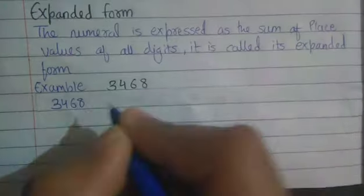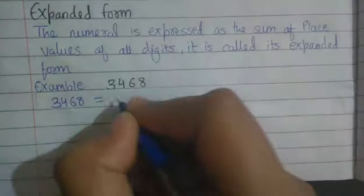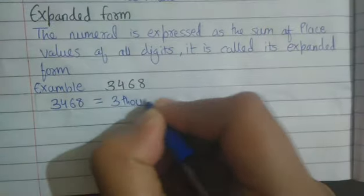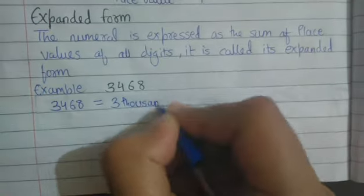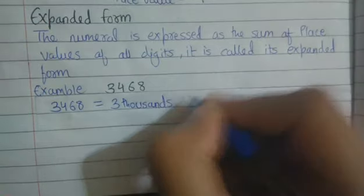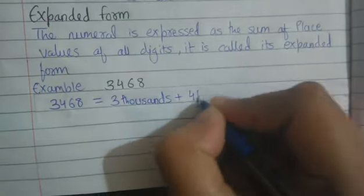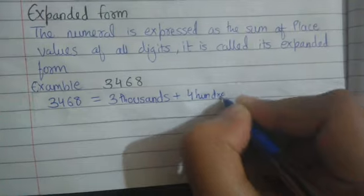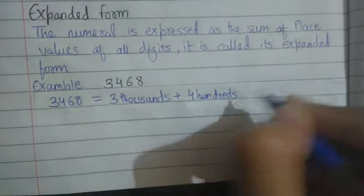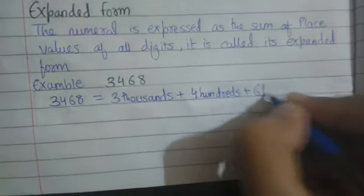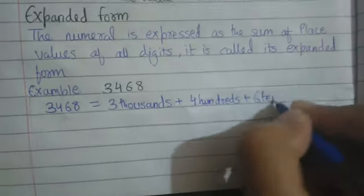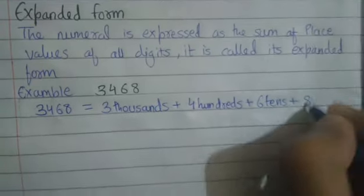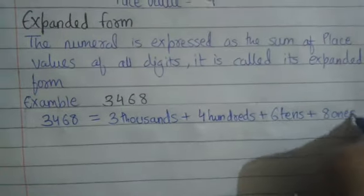We will write it as 3 thousands plus 4 hundreds plus 6 tens plus 8 ones.